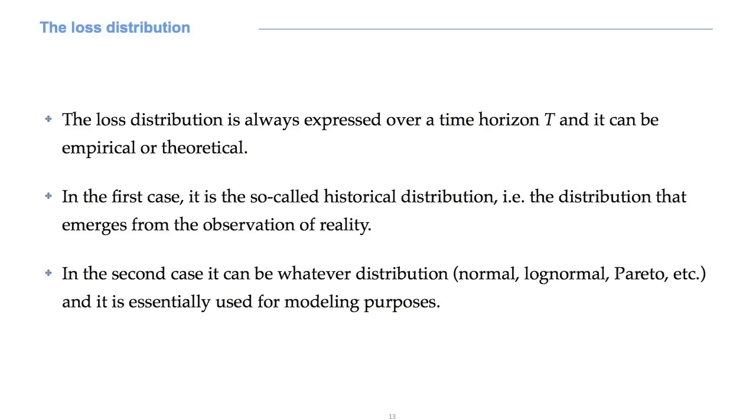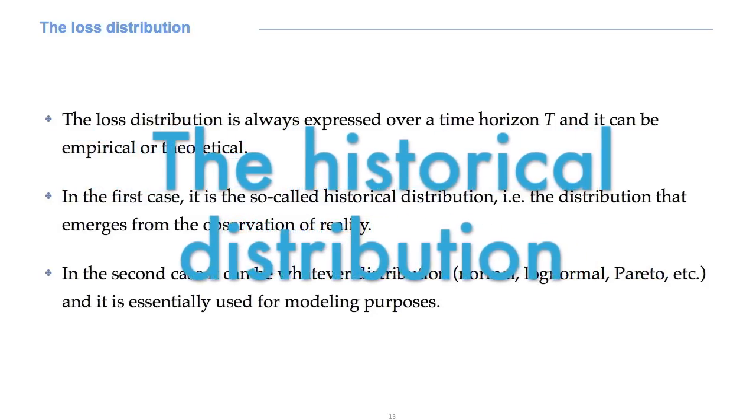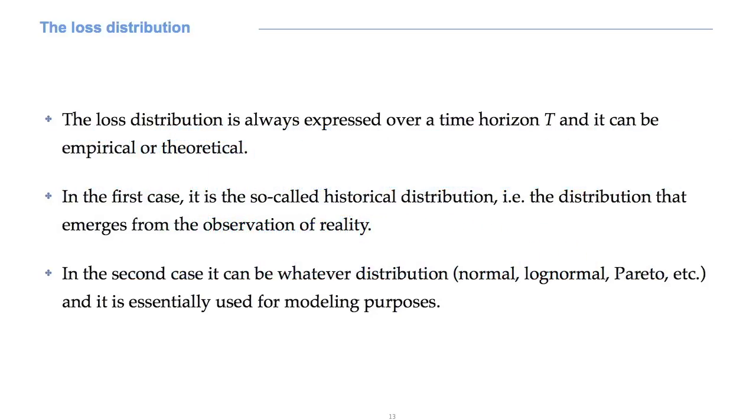Loss distribution is always expressed over a time horizon capital T, and it can be empirical or theoretical. In the first case, it is the so-called historical distribution, that is the distribution that emerges from the observation of reality when we collect data about historical losses.